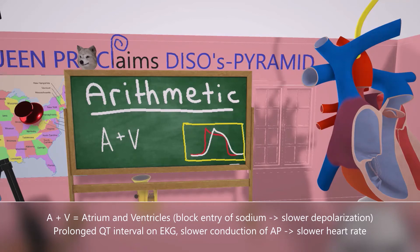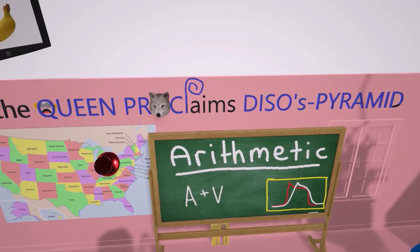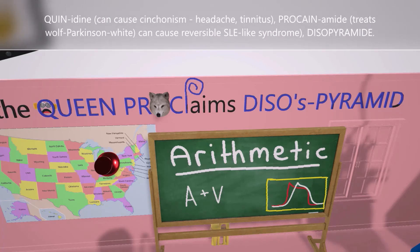Now let's talk about the drugs included in class 1A. The class motto is: 'The QT proclaims diso's pyramid.' QT stands for quinidine, proclaims for procainamide, and diso's pyramid for disopyramide. All of these drugs are used to treat arrhythmias, but they should be avoided in people with heart failure due to their negative inotropic effects on the heart.